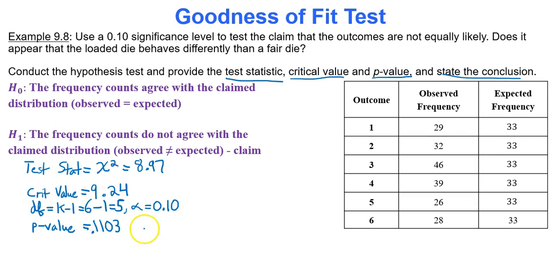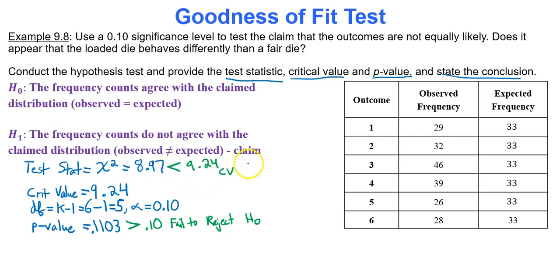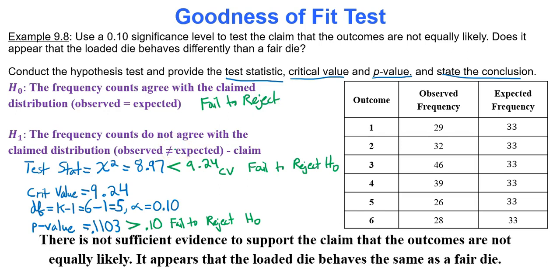The easiest approach is comparing the p-value to alpha. The p-value of 0.1103 is greater than alpha of 0.1, so we fail to reject the null hypothesis. You can also compare the test statistic 8.97 to the critical value 9.24 — it's less, which also means fail to reject. There is not sufficient evidence to support the claim that the outcomes are not equally likely. It appears the loaded die behaves the same as a fair die — you might want to retry your weighted dice-making skills.